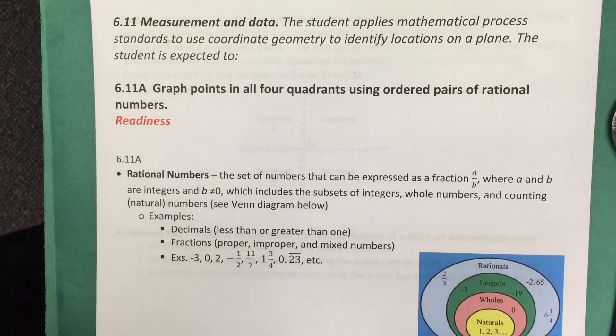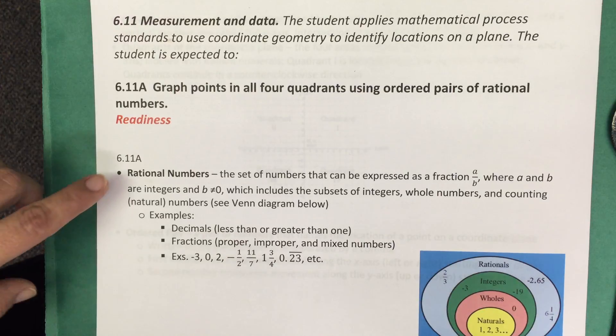In this video we're going to take a look at standard 6.11A, which says graph points in all four quadrants using ordered pairs of rational numbers. I'd like to review some important terminology related with the standard.